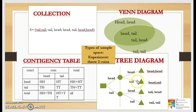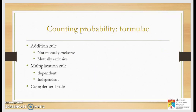To calculate probability, we have three rules: the addition rule, multiplication rule, and complement rule. The condition for the addition rule depends on whether events are mutually exclusive or not mutually exclusive. For the multiplication rule, the condition is whether events are dependent or independent.